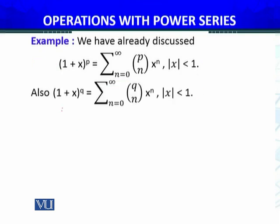My f(x) is this, my g(x) is this. Now g(x) is represented by the same power series and the radius of convergence is the same, |x| less than 1.